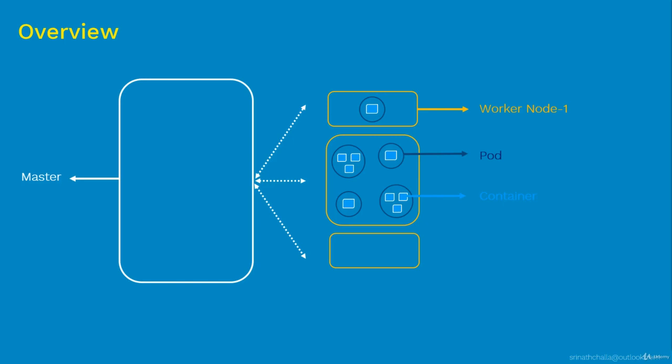The master is responsible for managing the whole cluster. It monitors node health, stores information about cluster members and configuration, and moves workloads from a failed node to a healthy worker node. The Kubernetes master is responsible for scheduling, provisioning, controlling, and exposing API to clients. To summarize the basic Kubernetes architecture: you have a master, worker nodes, pods, and containers. Worker nodes contain pods; pods contain containers; and each pod can have one or more containers.